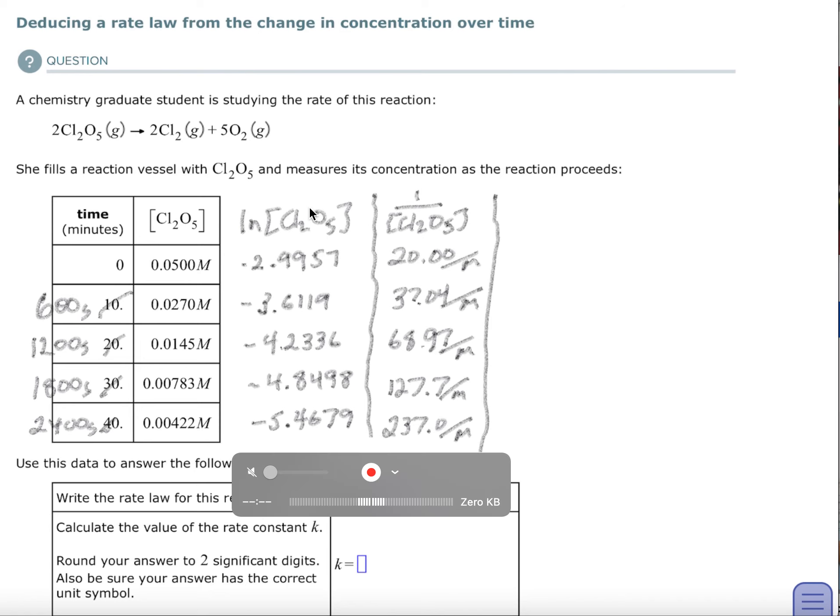So in the first order reactions, I need the natural log of the concentration. So I just took this number, 0.0500, and pushed the natural log button, my ln button on the calculator, and this is what it gave me, negative 2.9957. And I did this for all of these. For a second order reaction, I need one over the concentration. So I took 0.0500 and then put the one over x button. These are my concentrations for that.